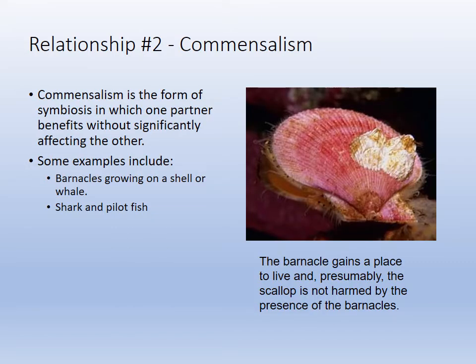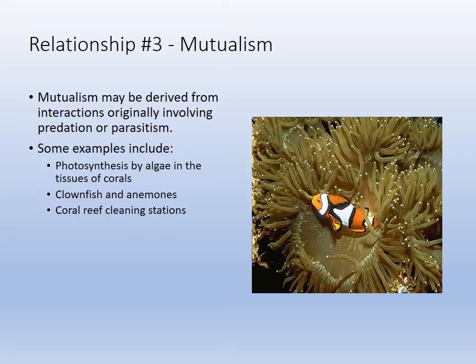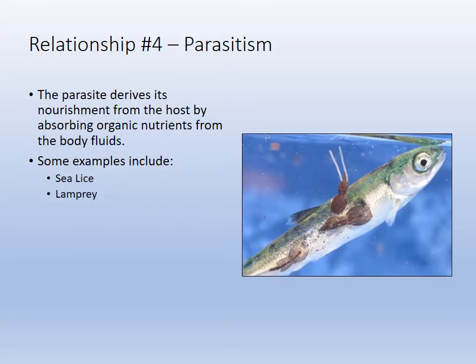Commensalism is a plus-N relationship. For example, a barnacle on a scallop's shell: the barnacle benefits, the shell is external with no nerves, and the scallop presumably doesn't know it's there — neutral. Mutualism is plus-plus, both benefit. Parasitism is plus-minus: the parasite benefits, the host is harmed. An example of parasites shown here are sea lice — parasitic copepods.